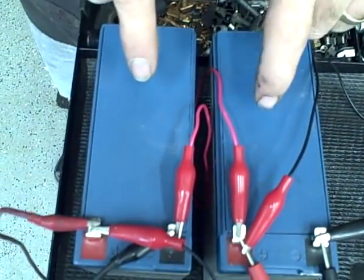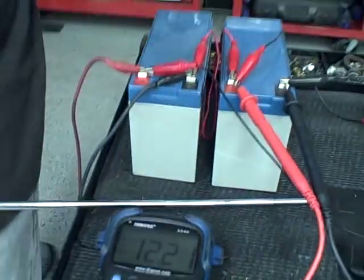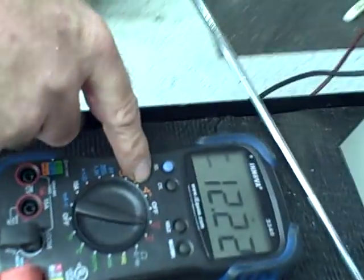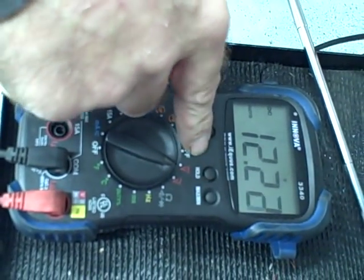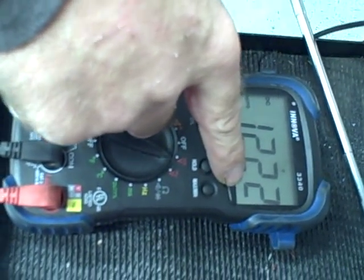Then over here you've got your two lead acid batteries, one's a primary and one's a secondary or a charger. Over here you can see our volt meters, this is for the charger, we're running at 12.21 and it's still climbing.